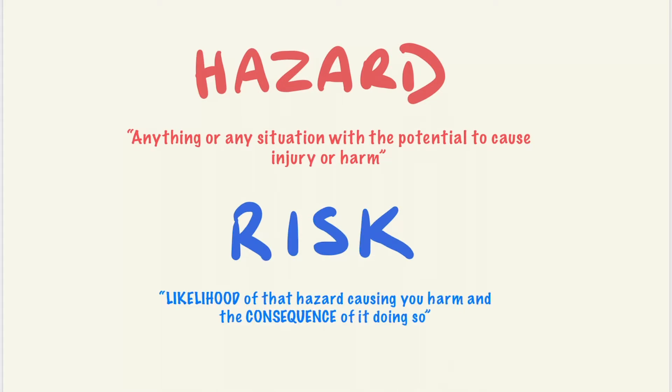Just to recap on what is hazard and what is risk. A hazard is anything or any situation with the potential to cause injury or harm. Risk is an evaluation of the likelihood of that hazard causing you harm and the consequence of it doing so. The inherent hazard is always constant. However, the level of risk can change depending on what type of control are in place.